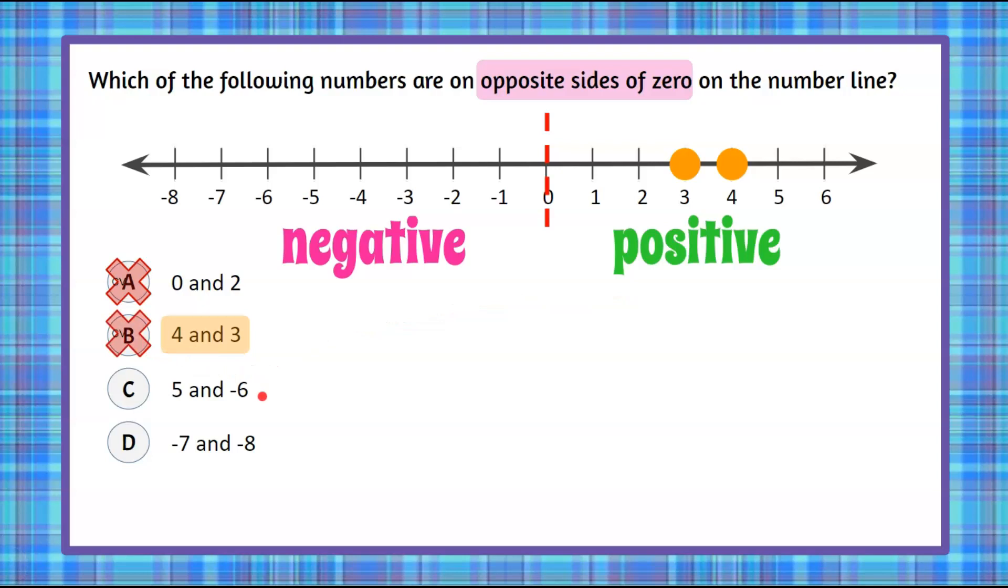Now let's consider C: five and negative six. We're going to plot five and negative six. We can see that negative six is on the left side of zero, the negative side, and five is on the right, the positive side, and those are opposite sides. So we have our answer choice.